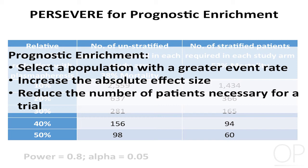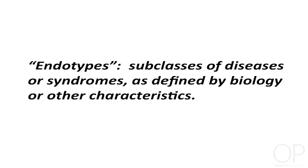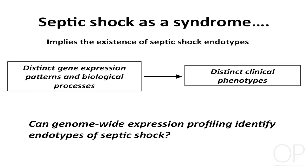Now let's turn to predictive enrichment. Through bioinformatics and transcriptomics, we've tried to identify what we call septic shock endotypes. An endotype is a subclass of a disease or syndrome as defined by biology. If you think about septic shock as a syndrome — it's a constellation of problems and patients are very different — it implies the existence of endotypes. We hypothesize that these endotypes have distinct gene expression patterns and biological processes leading to distinct clinical phenotypes. Can transcriptomics and whole-genome expression profiling identify endotypes of septic shock?